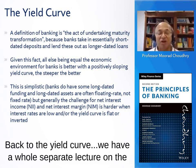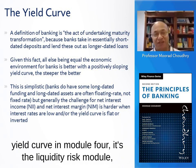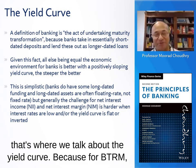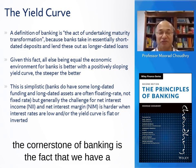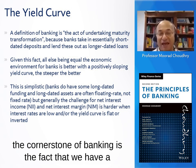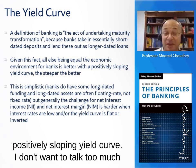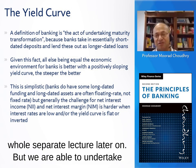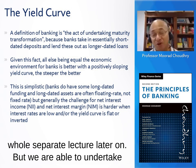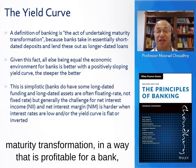Back to the yield curve — we have a whole separate lecture on the yield curve in Module 4, actually it's the liquidity risk module, but that's where we talk about the yield curve. For BTRM, the cornerstone of banking is the fact that we have a positively sloping yield curve. I don't want to talk too much about the yield curve in this lecture because we have a whole separate lecture later on.